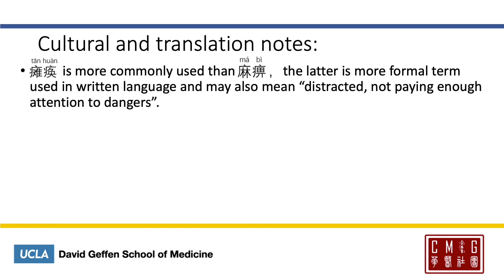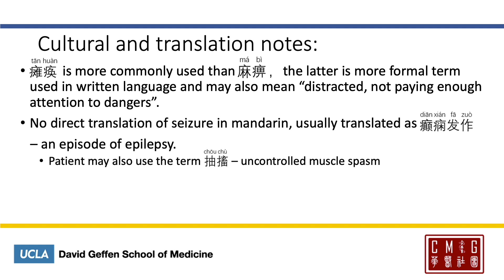Here are some translation notes. 瘫痪 is more commonly used than 麻痹. The latter is a formal term, but it can also mean distracted or not paying enough attention to dangers. It may also be confused with 麻木, which means numb. Seizure has no direct translation in Mandarin. It's usually translated as 癫痫发作 — an episode of epilepsy. Remember that 癫痫 is epilepsy, but you can have a seizure without epilepsy, so translating it as 癫痫发作 isn't the most accurate, but it's the most commonly used. The patient may also use 抽搐 to describe a seizure, which means uncontrolled muscle spasm.